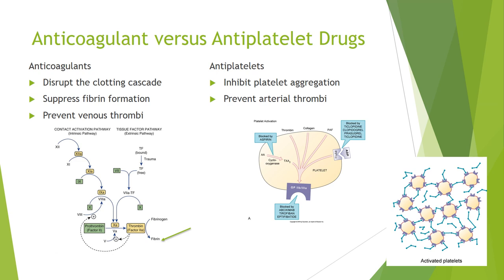Different anticoagulants will target different parts of that cascade, different factors in this chain reaction, as you can see in this image. That reduces the amount of fibrin produced. Some anticoagulants will actually prevent synthesis of the factors, and others will simply bind to the factors already existing in the bloodstream and inhibit them.